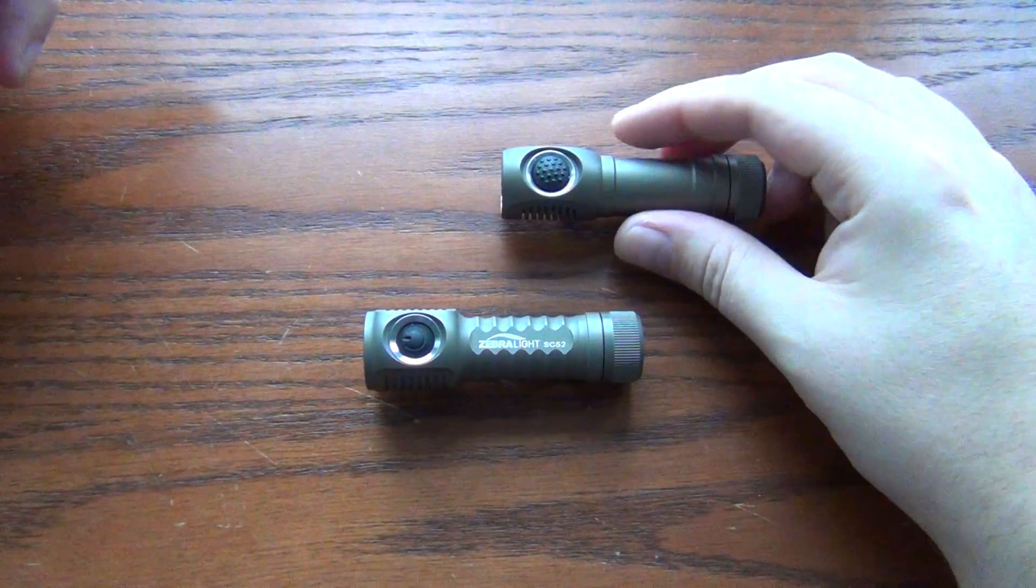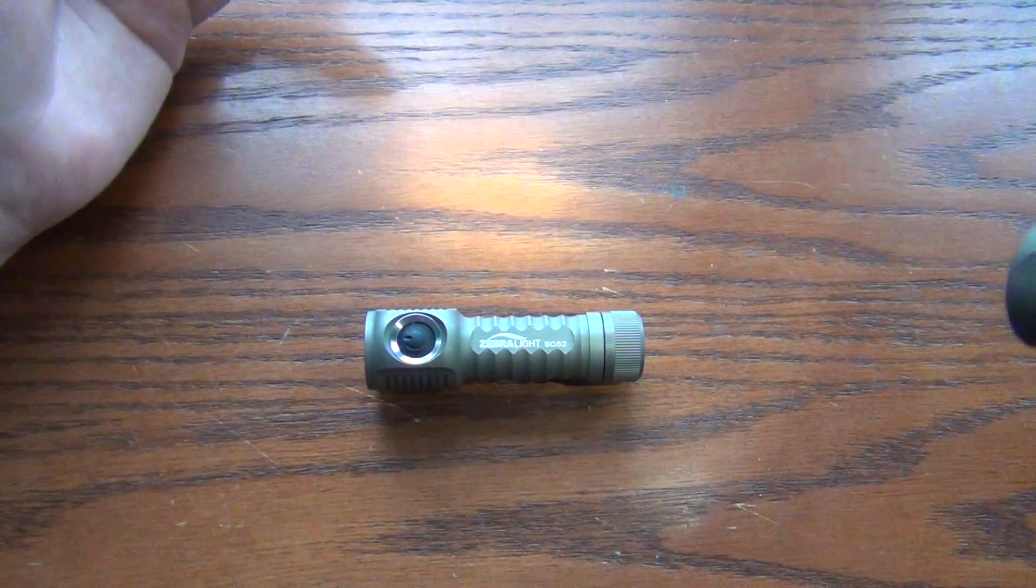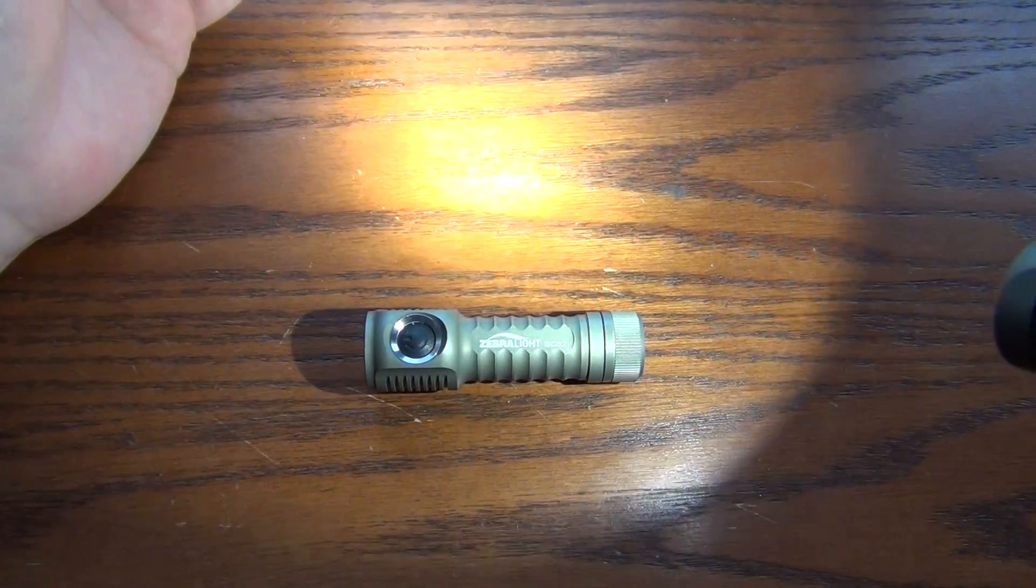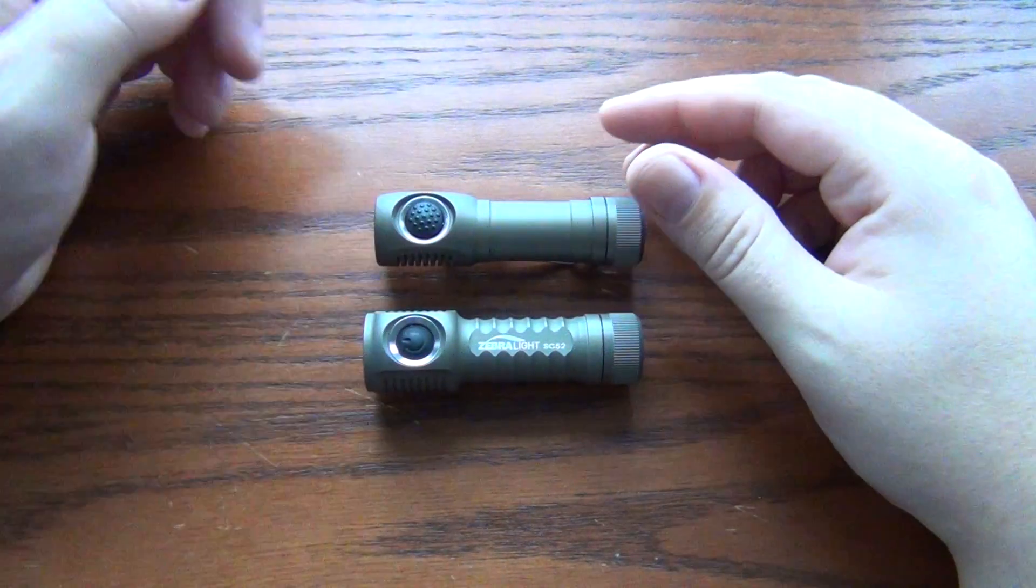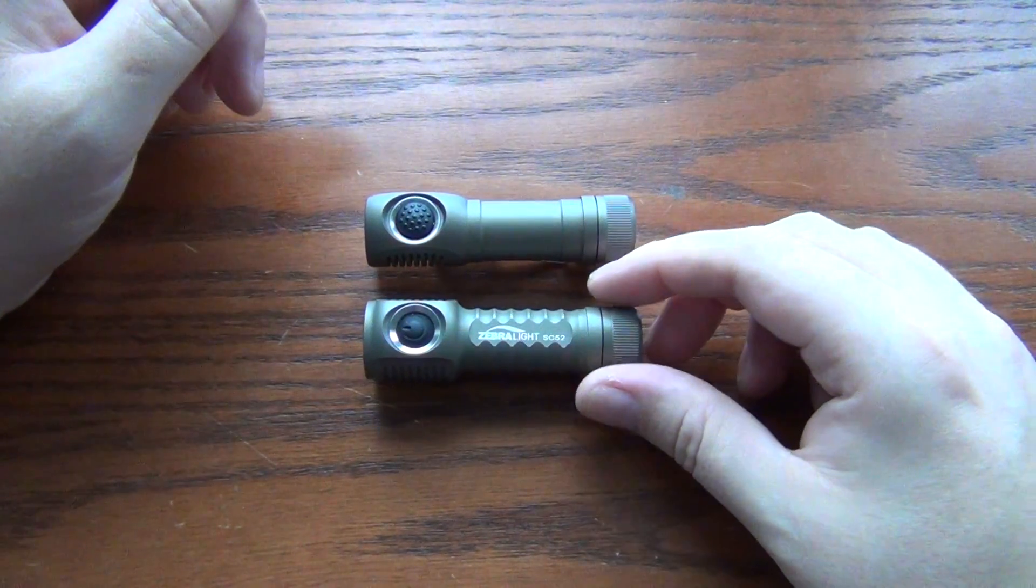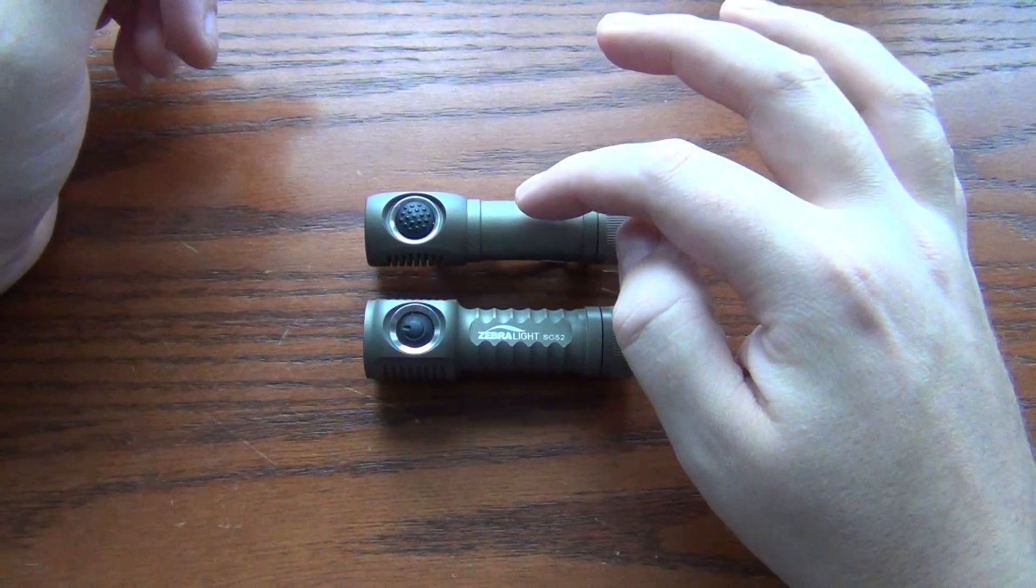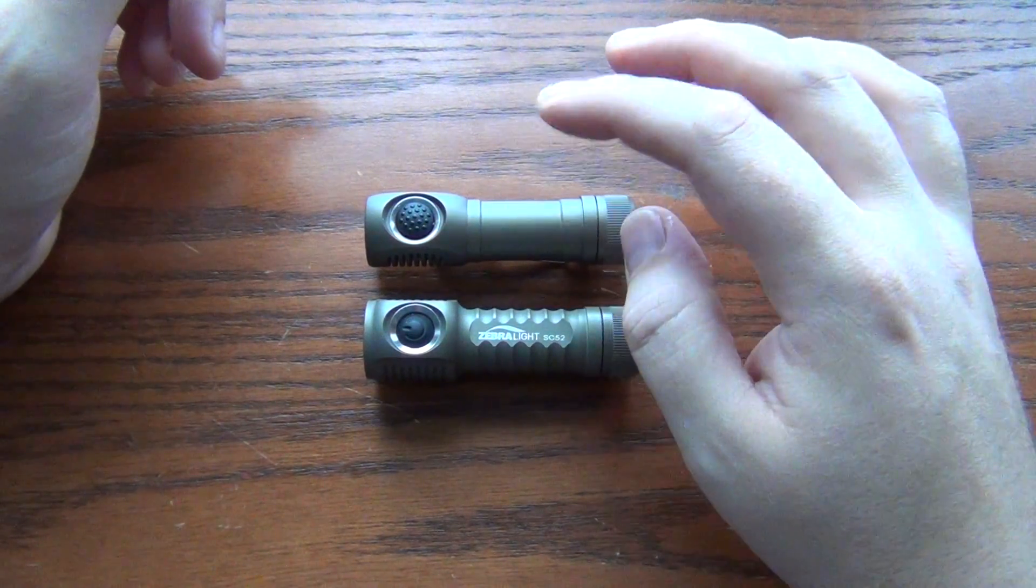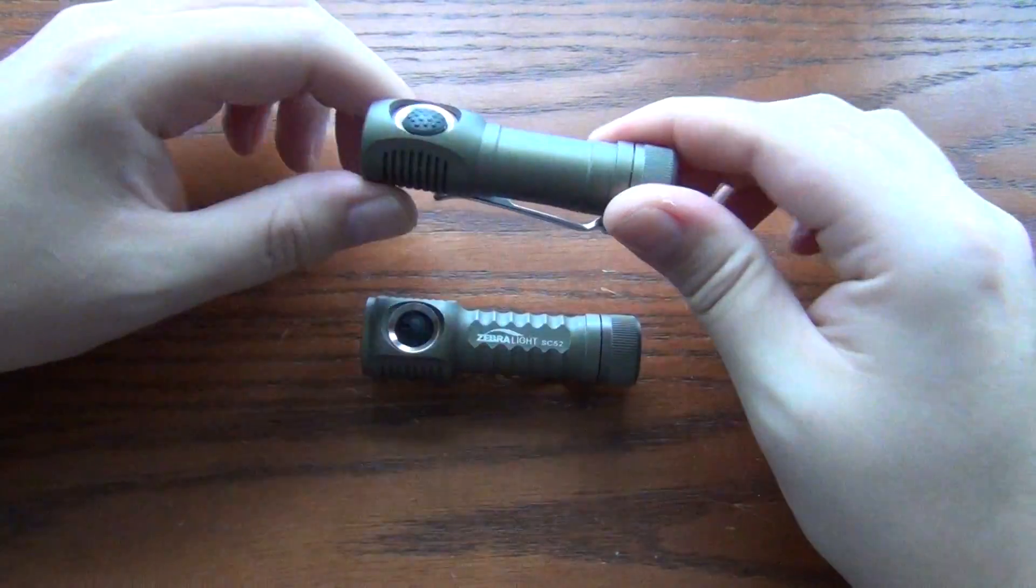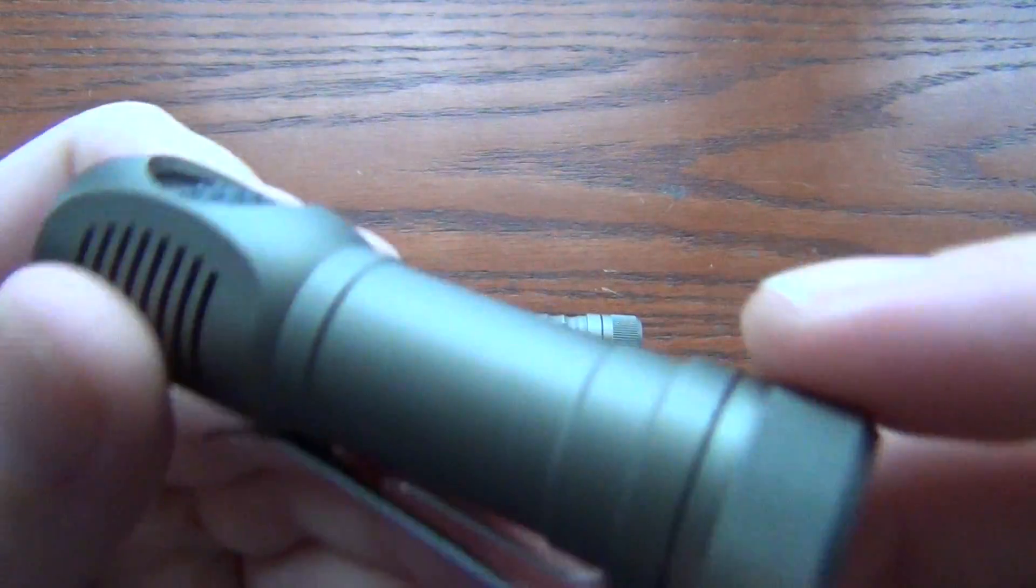It puts out around 200 lumens in the cool white version. And it had three main levels. And then each of the main levels has a secondary selection. So in this light I think there was a total including the strobe function of about eight levels if my calculations are correct.